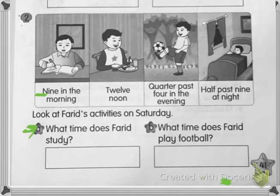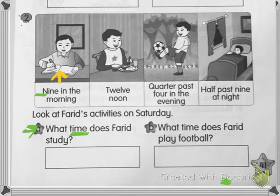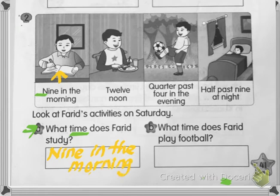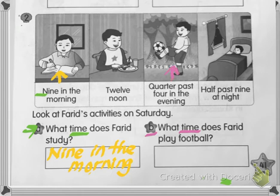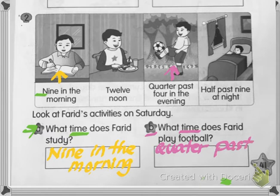Question A: What time does Farid study? Look at the picture — this picture shows Farid studying. So the answer is nine in the morning. Write down nine in the morning. Question B: What time does Farid play football? This picture shows Farid playing football. The answer is quarter past four in the evening.